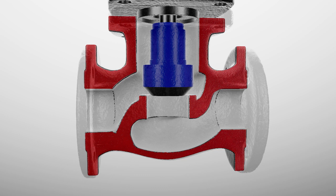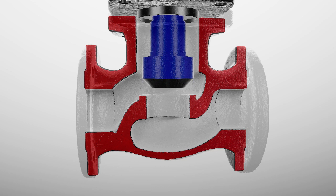This intermediate position, called throttling, allows for some flow, but not as much. Flow can be regulated in this manner by lowering or raising as desired.